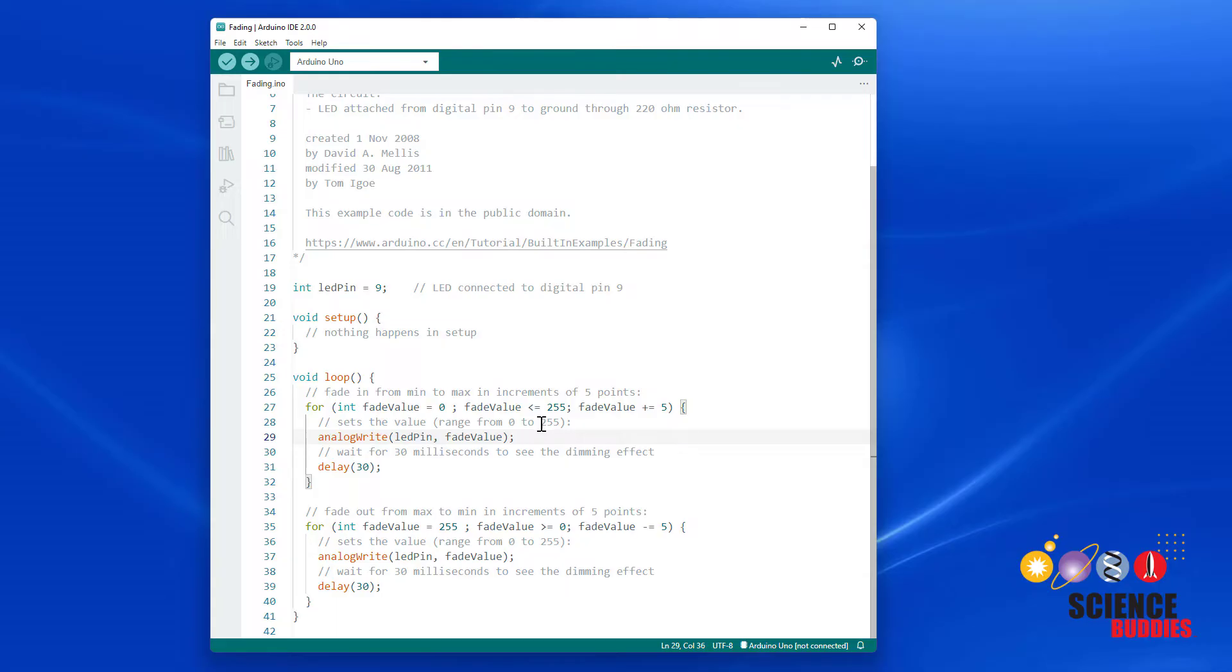For example, if you try to give it 256, that won't make the LED any brighter. It will actually reset all the way back to zero and turn the LED off. So don't worry if you don't really understand how binary numbers work. Just remember that you have to give analog write a number between zero and 255. Anything outside of that range will cause strange behavior. After that analog write command, we have a delay command. We're going to wait for a little bit at each brightness level before we go through the loop again.